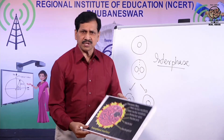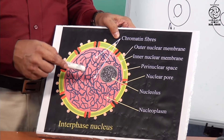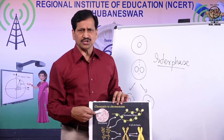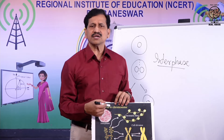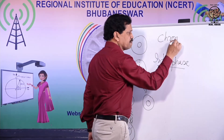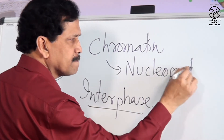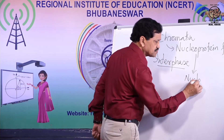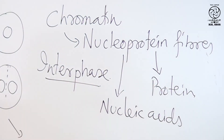That is why in this picture it is written 'interphase nucleus.' In interphase, inside the nucleus, in the nucleoplasm, there are thin thread-like structures which are chromatin, or chromatin fibers. These chromatin fibers are nucleoprotein fibers because they contain nucleic acids and proteins.